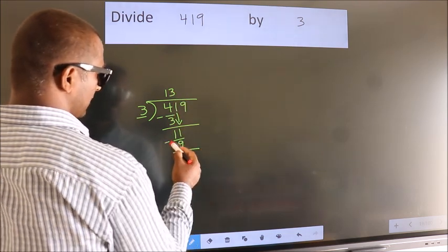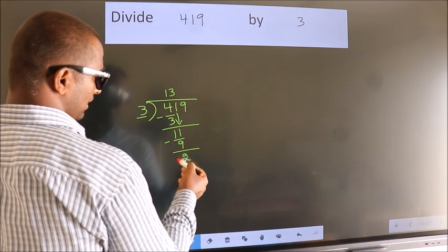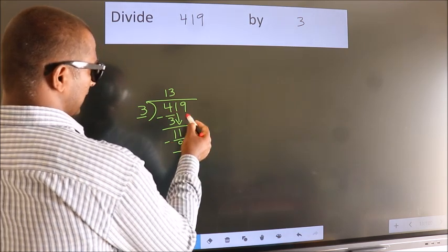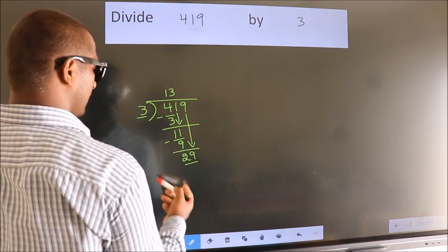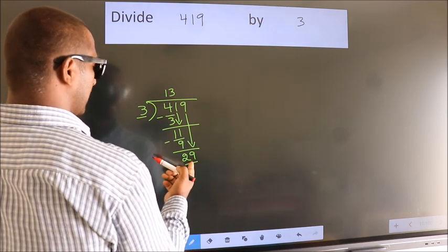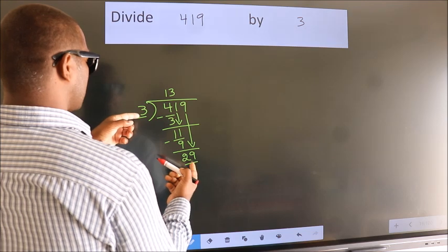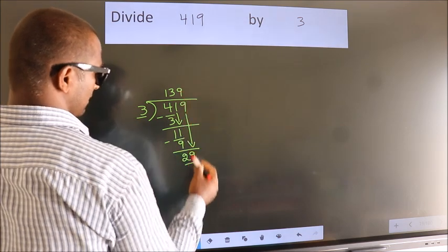Now, we subtract. We get 2. After this, bring down the beside number. 9 down, so 29. A number close to 29 in the 3 table is 3 9s 27.